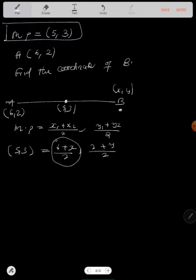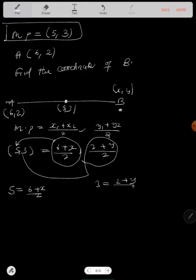So anything that has to do with X will go here, that's X. And this Y will take up this part. So I'm saying 5 is equal to 6 plus X over 2. And I'm saying 3 is equal to 2 plus Y over 2.